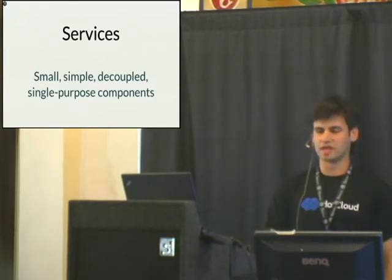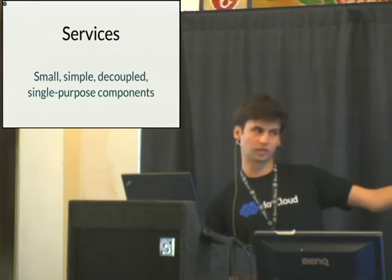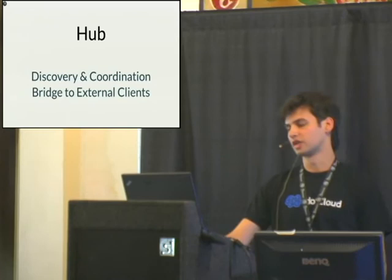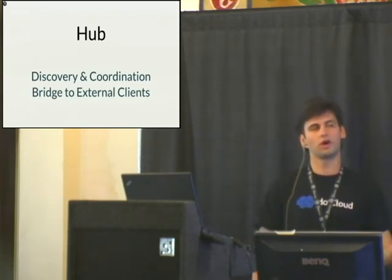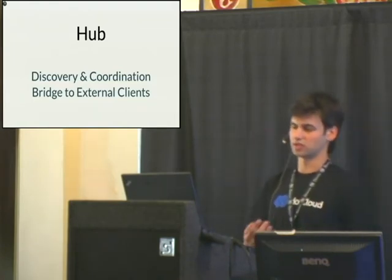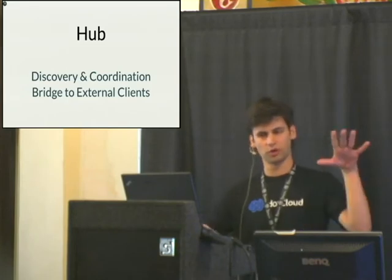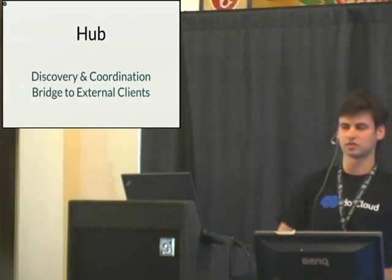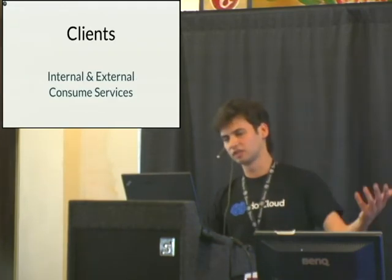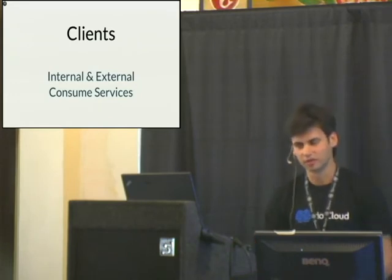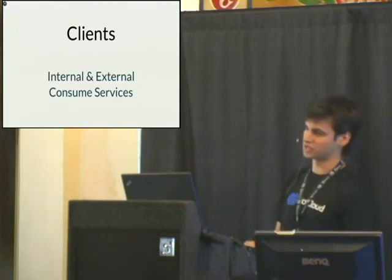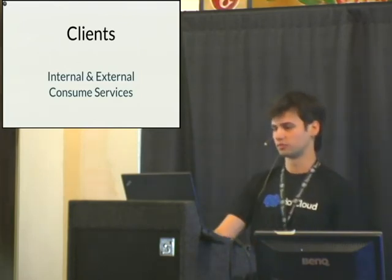There are three main components to the system. The first are the services — small, decoupled, single-purpose components. The next is the hub, which is not a broker — messages go point-to-point — but it does discovery and coordination of the different nodes in the network and acts as a bridge to external clients so they don't need access to all internal services. Finally, there are the clients that make use of the system, either internal or external to the network, which consume the services. It's also optionally distributed — all services can run on a single machine or spread across many.